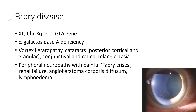Next is Fabry disease. It is an X-linked disorder occurring due to alpha-galactosidase A deficiency. The ocular features include vortex keratopathy, posterior cortical and granular cataracts, and conjunctival and retinal telangiectasia. Systemic features include peripheral neuropathy with painful crises, renal failure, angiokeratoma corporis diffusum, and lymphedema.